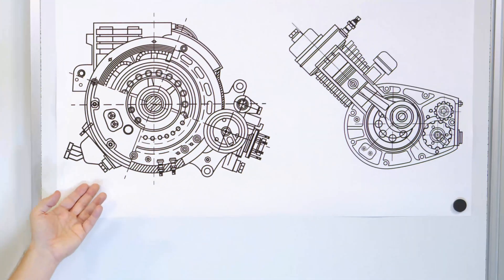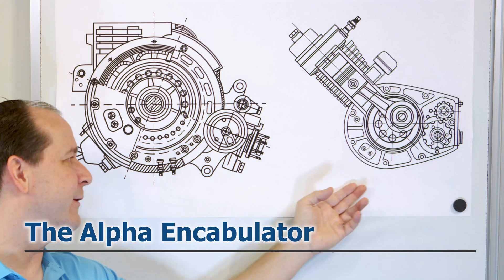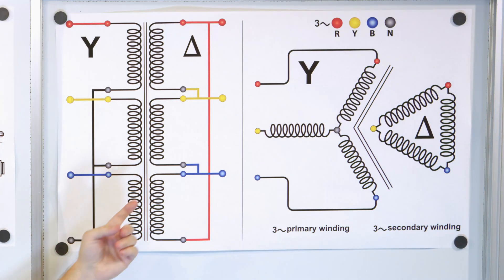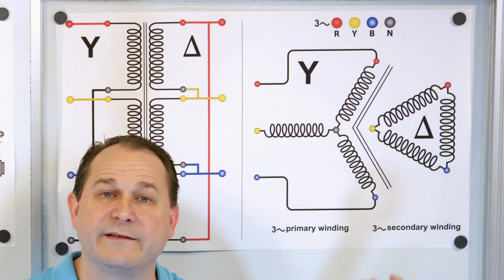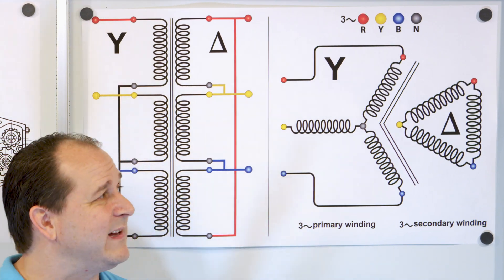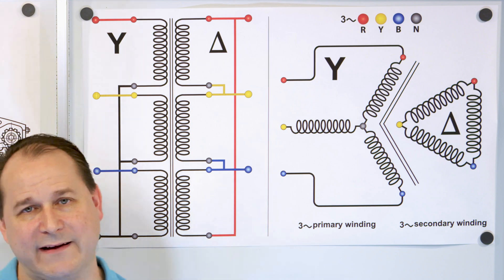We call this new power supply the alpha encabulator. Now, the only new principle involved is that instead of power being generated by the relative motion of conductors and fluxes, it's instead produced by the modial interaction of magnetoreluctance and capacitive directance.